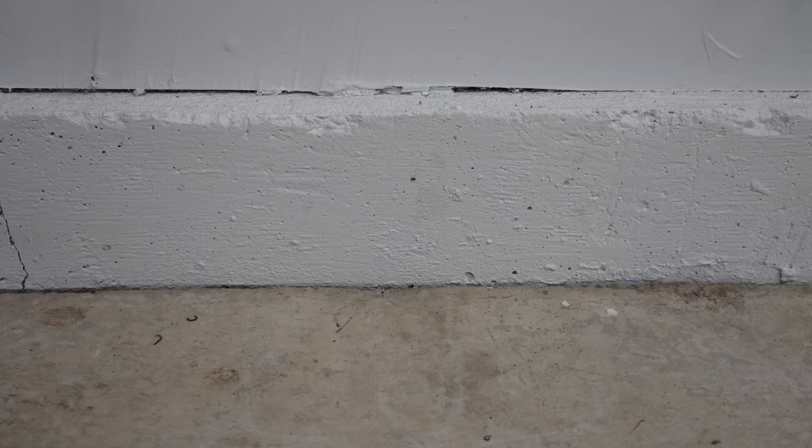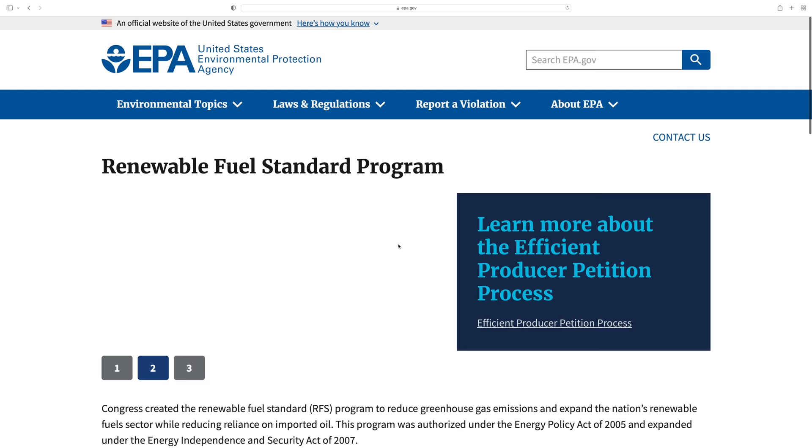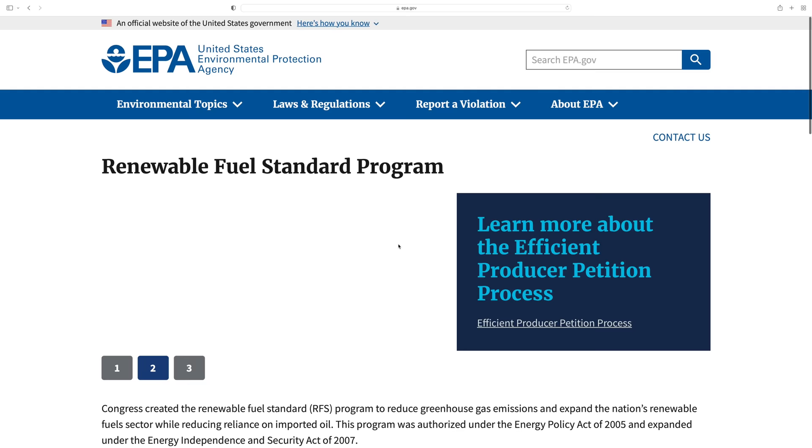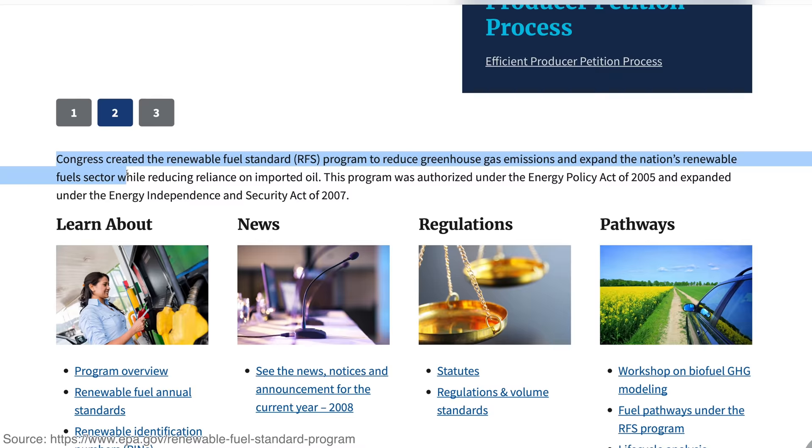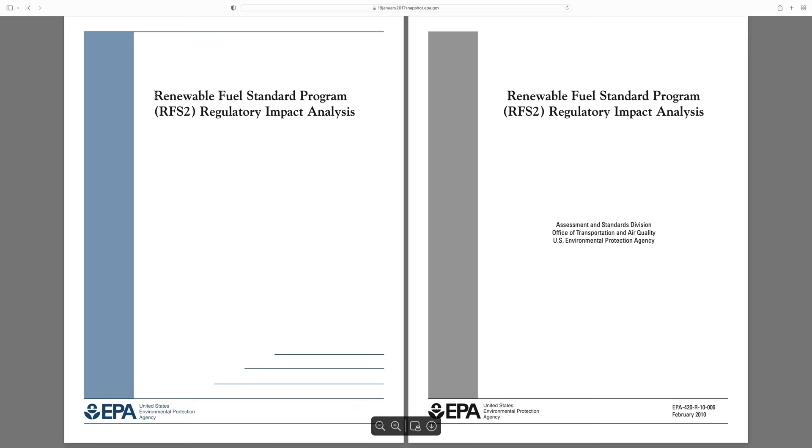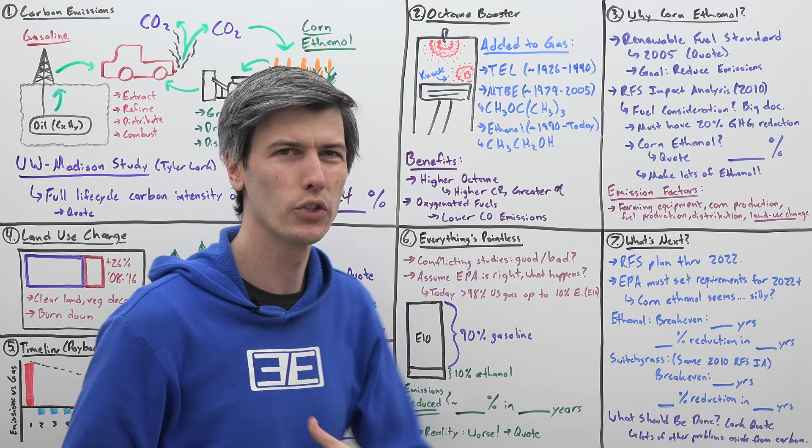However, they don't mean that you have to create that ethanol from corn. So why are we using corn-based ethanol? Well, this dates back to the 2005 Renewable Fuel Standard. So if you look at the website for the Renewable Fuel Standard, it says Congress created the Renewable Fuel Standard to reduce greenhouse gas emissions and expand the nation's renewable fuel sector while reducing reliance on imported oil. That all sounds great.